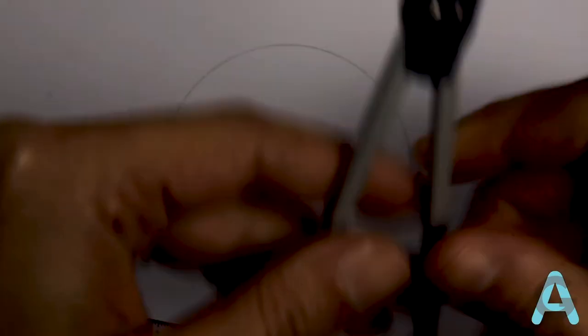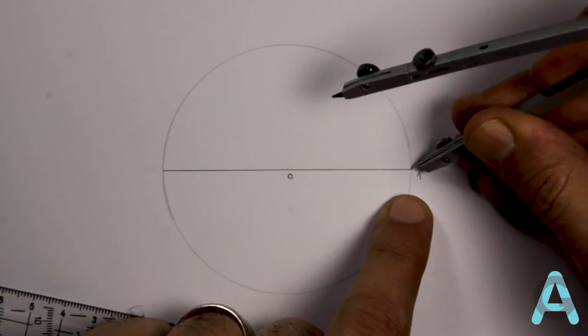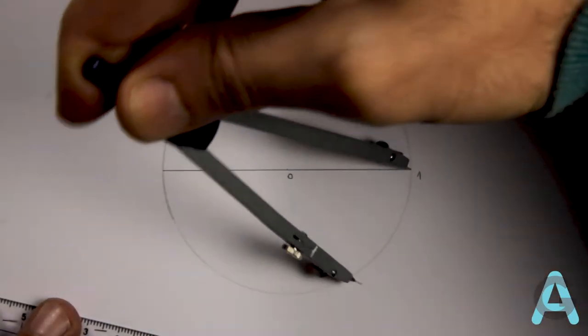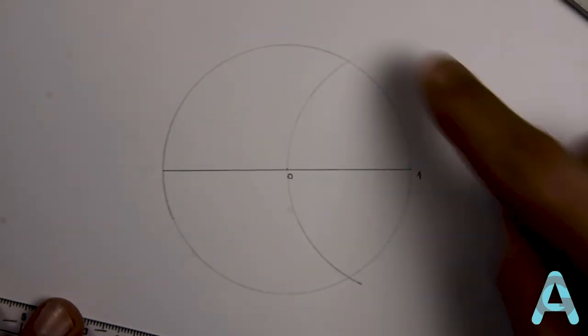Afterwards we'll bisect the segment O-1. For that we'll put the middle of the compass in the point 1, open the compass until O and draw an arc that intercepts the circle two times.